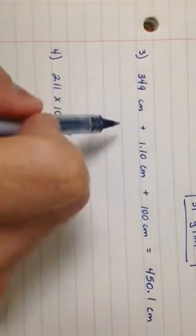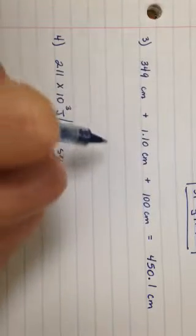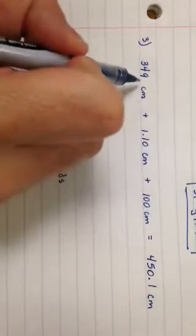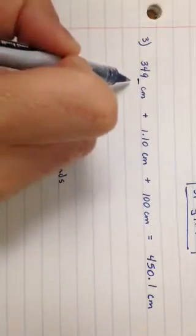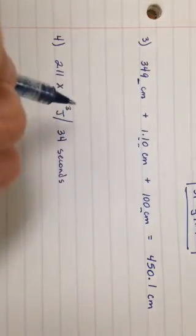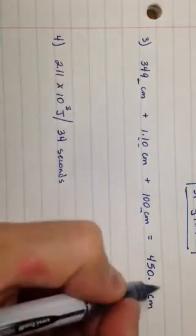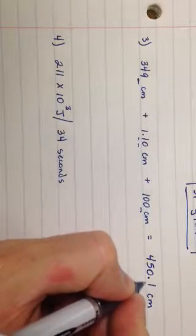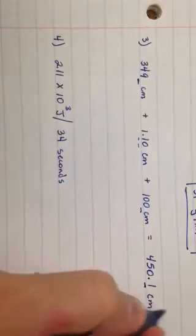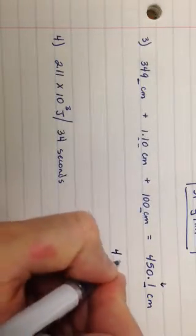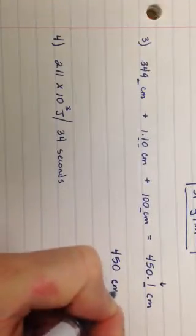Remember, we're adding, and whenever we're adding or subtracting, we round our answer to the number of decimal places matching the value with the least decimal places. The value 349 has zero decimal places, 1.10 has two, and 100 has zero decimal places. So I round all decimal places out of the answer. The digit after the ones place is less than five, so it rounds down, leaving 450 centimeters.